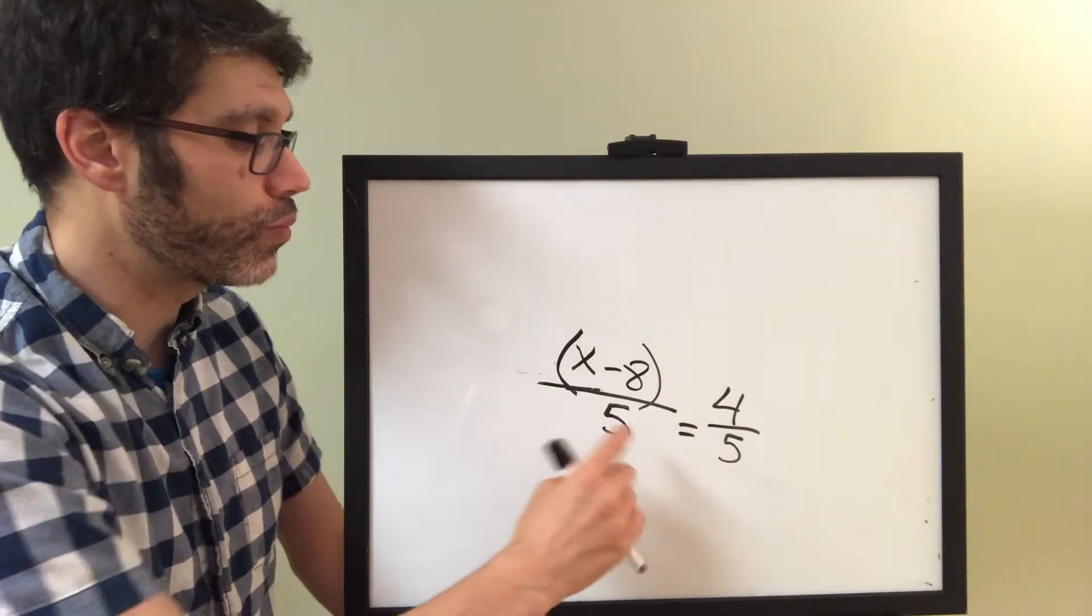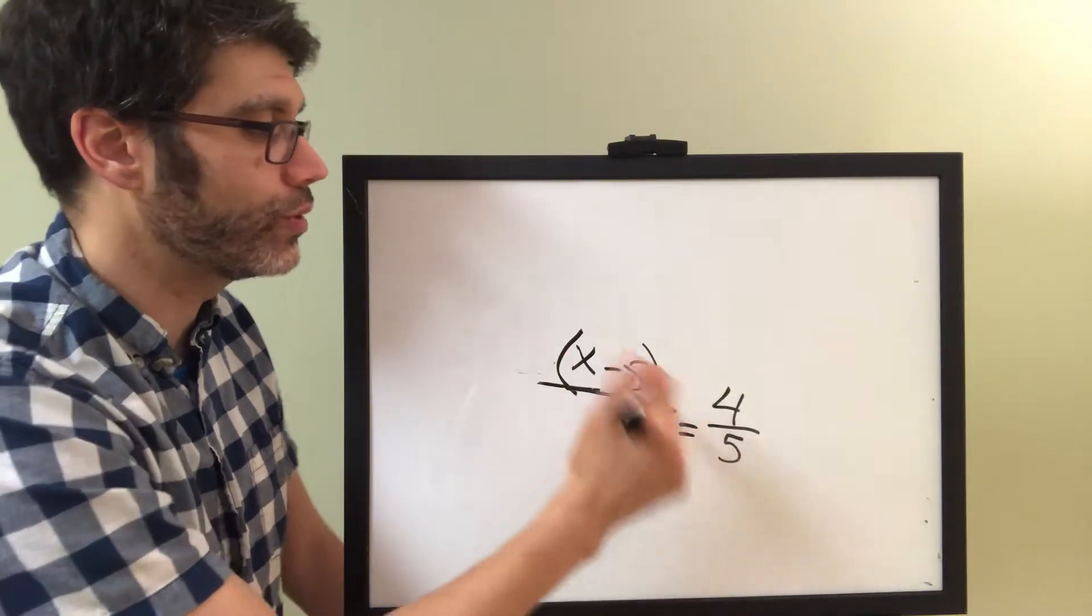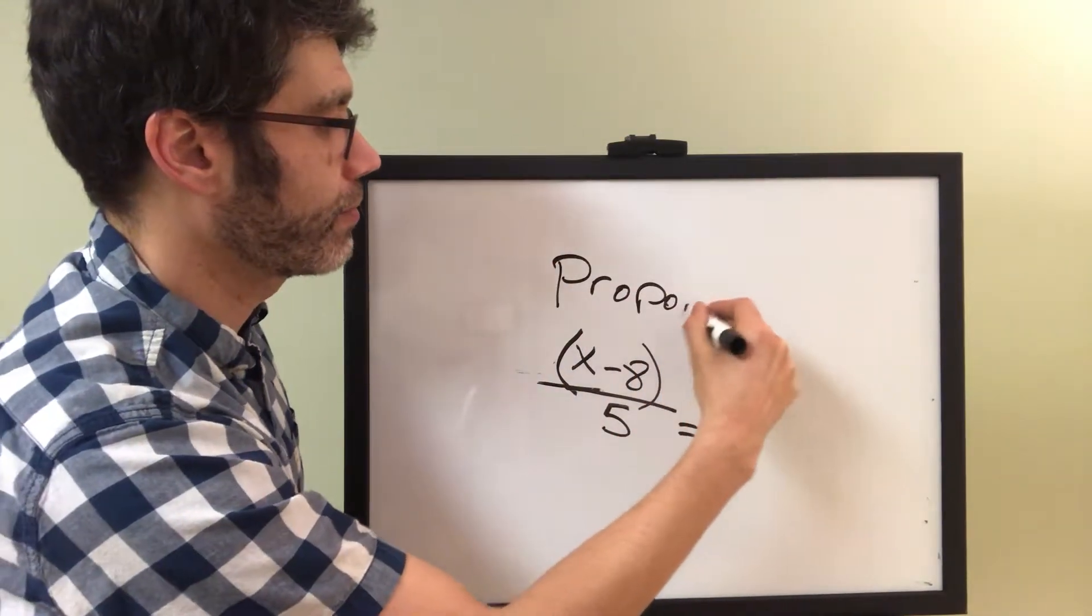When we have a fraction that's set equal to another fraction, we call it something very specific. And there's a vocabulary term that this is. When one fraction is set equal to another fraction, it's called a proportion.